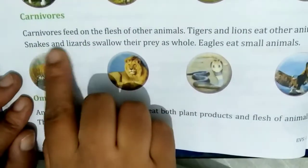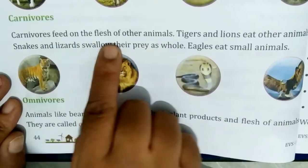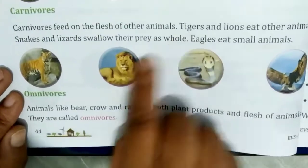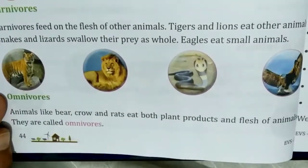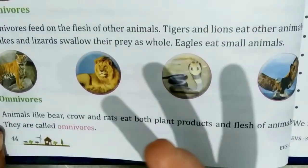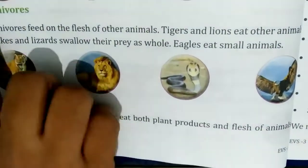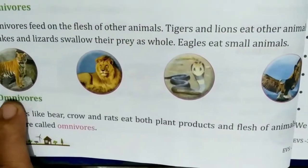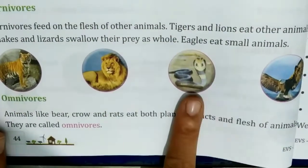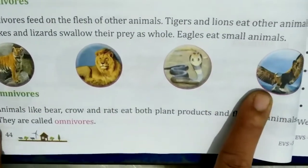Now carnivorous. Carnivorous animals feed on the flesh of other animals. Examples of carnivorous animals include tiger, lion, snake and eagle.